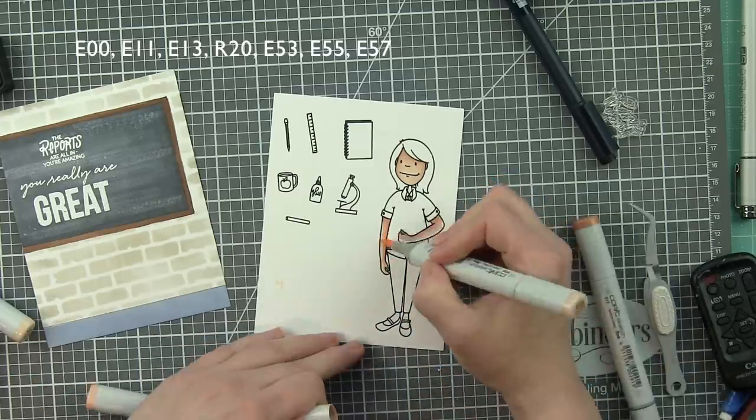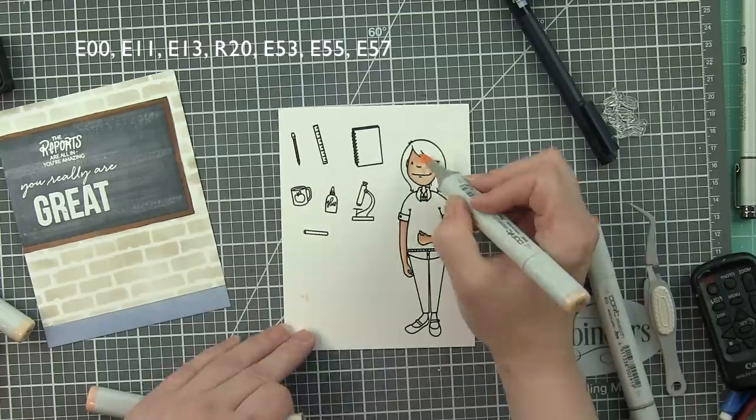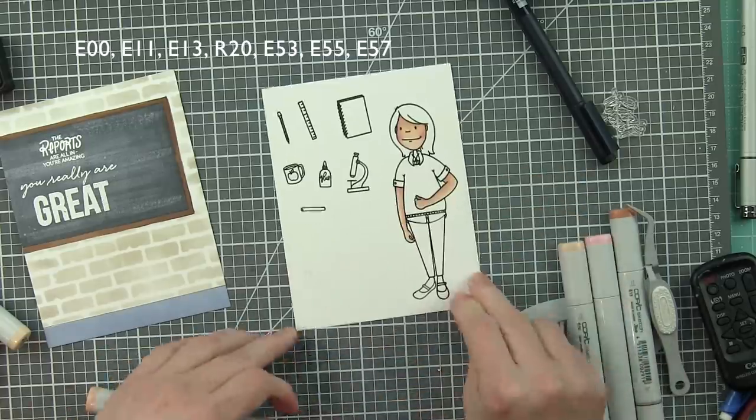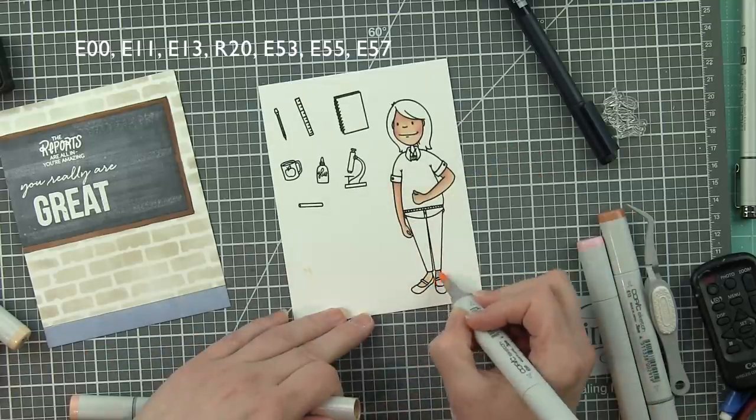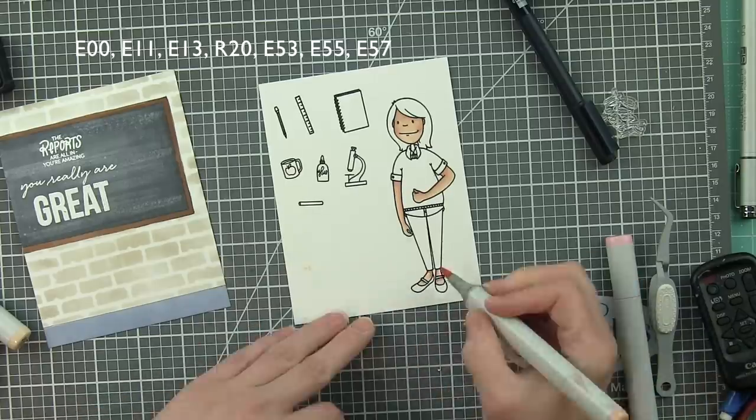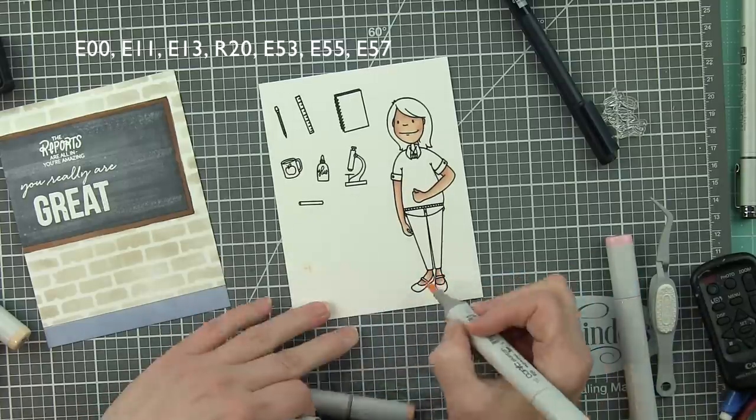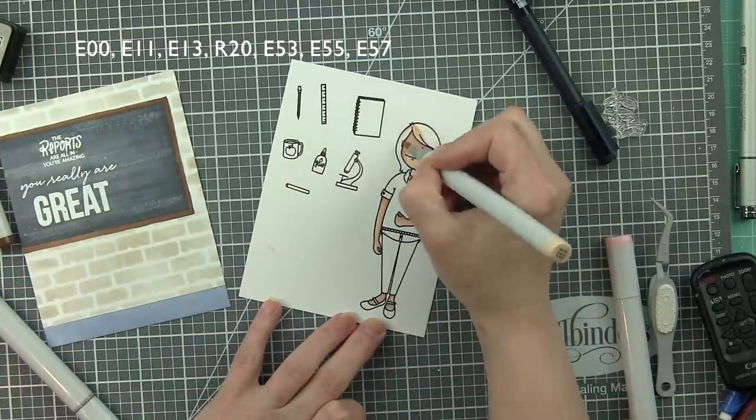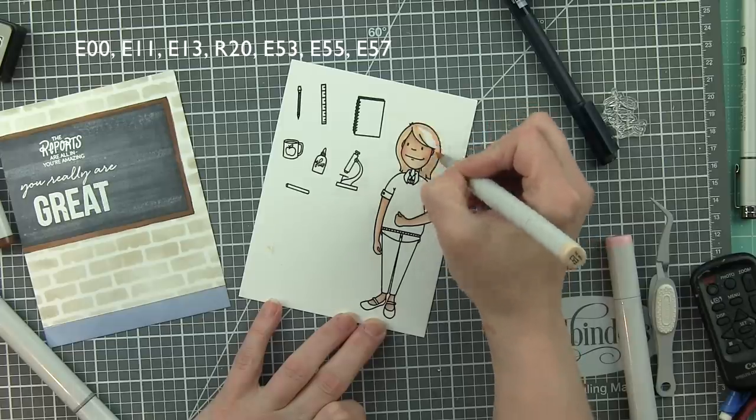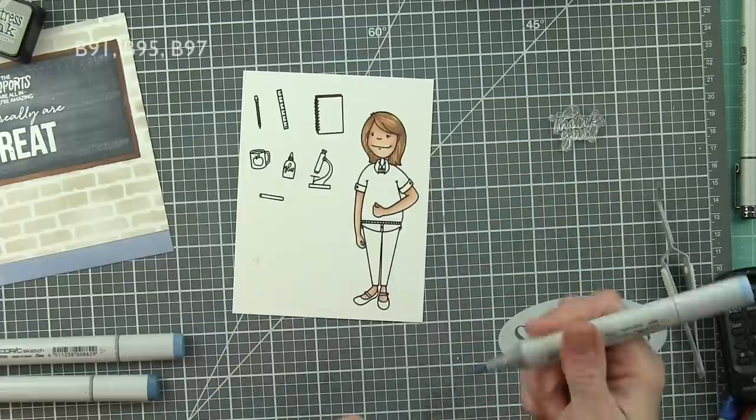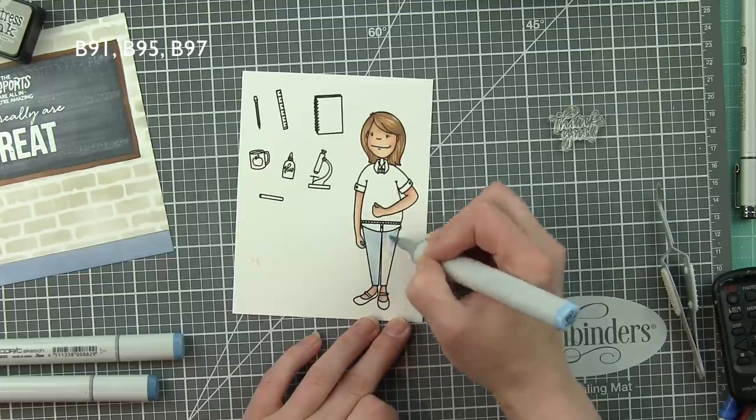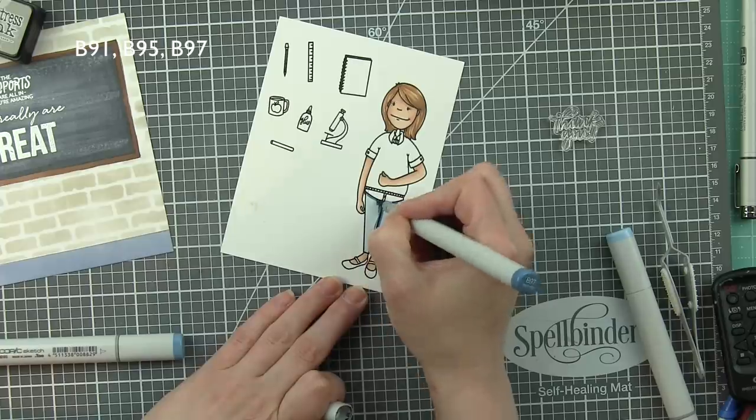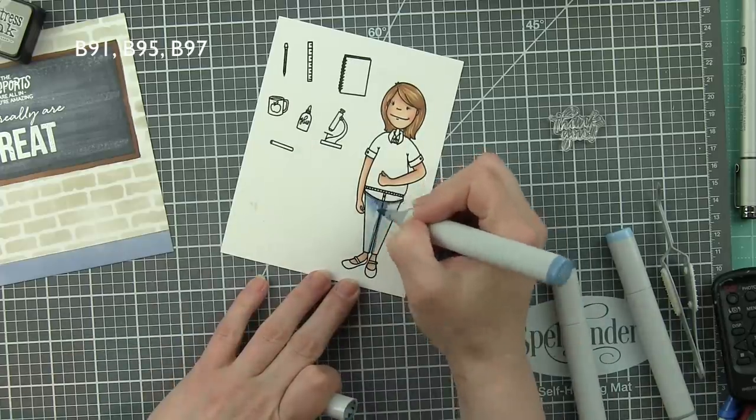And to keep it easy and consistent, I did the skin and hair exactly the same for both the teacher lady and medical lady. But you could definitely use whatever colors you want to here. I tend to start with skin and hair and then go out, build out from there with coloring in her outfit. So let's grab, do her hair real quick, E53, 55, and 57, and then move on to her little jean capris or jeans with B91, 95, and 97.